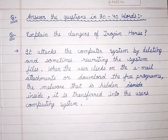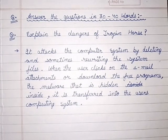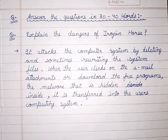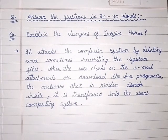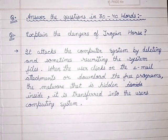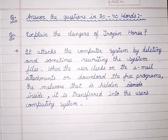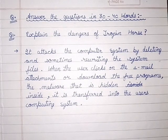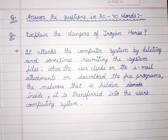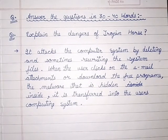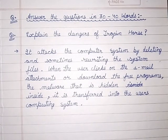Question number 4, answer the questions in 30 to 40 words. Question number 1: Explain the dangers of Trojan horse. Answer: It attacks the computer system by deleting and sometimes rewriting the system files. When the user clicks on the email attachments or downloads the free programs, the malware that is hidden inside is transferred to the user's computing system.